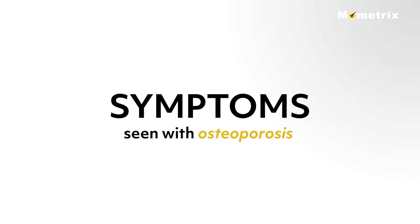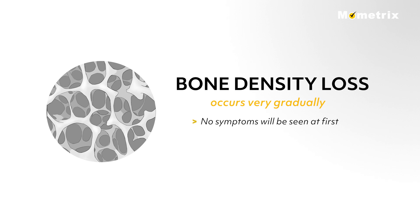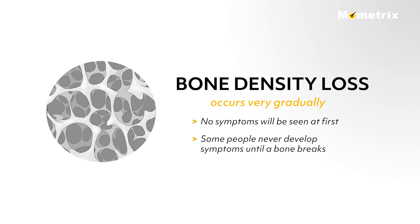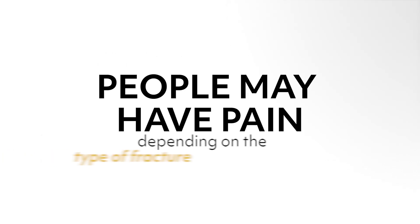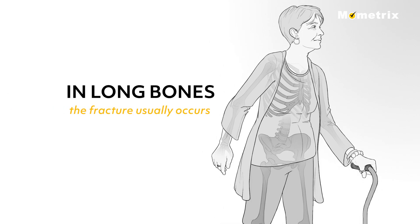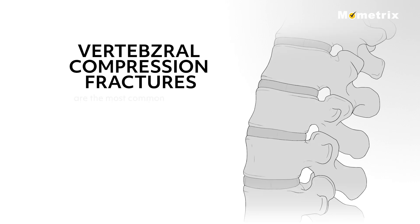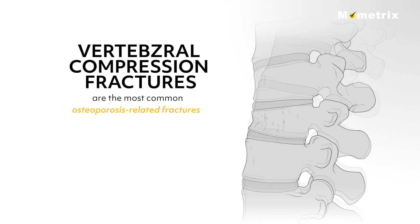Because bone density loss occurs very gradually, no symptoms will be seen at first, and some people may never develop symptoms until a bone breaks. People may have pain depending on the type of fracture. In long bones, the fracture usually occurs at the ends of the bones, and vertebral fractures usually occur in the middle to lower back. Vertebral compression fractures are the most common osteoporosis-related fractures.